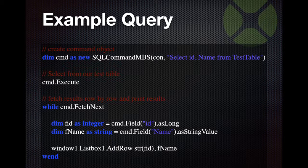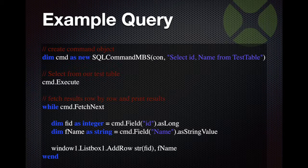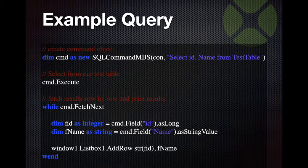Here follows an example to do a query. We create a new SQL Command MBS object with the SQL statement, then execute the statement. If no error happened, we loop over the records. The fetchNext method gets the next record. We pick values by field names and use accessor methods to get the data in the right data type, then add it to the list box.